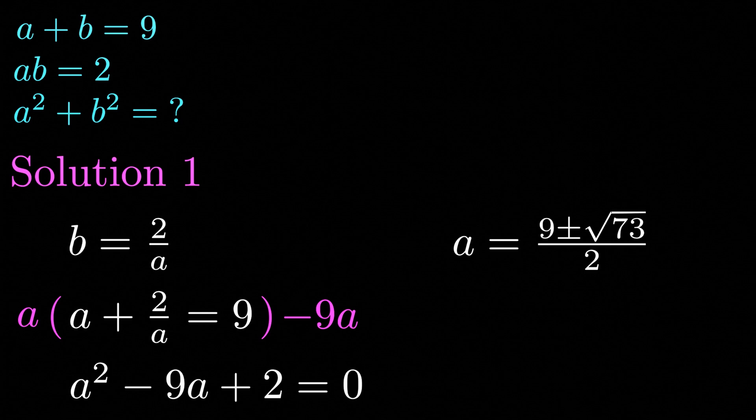Now we're going to take a to be equal to 9 plus the square root of 73 divided by 2. But if we were to take a to be equal to 9 minus the square root of 73 divided by 2 you would get the same answer, it's just that your value for b would be different.